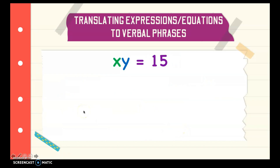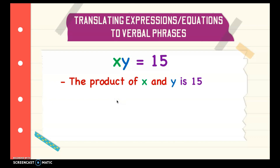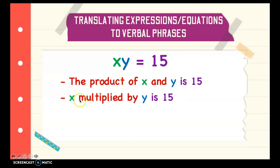Next we have xy is equal to 15. Since there is no operation between the two variables here, that means it's multiplication. So we can say the product of x and y is 15 — is means equals. Or you can also say x multiplied by y is 15. Another one: x times y is 50.